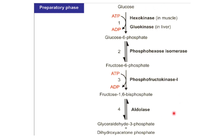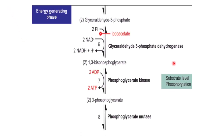This completes the preparatory phase or first phase of glycolysis. In the preparatory phase there is utilization of two molecules of ATP — one in the first step and another in the third step. Now the second phase is the energy-generating phase. The glyceraldehyde-3-phosphate synthesized in the first phase, along with dihydroxyacetone phosphate, is converted into another glyceraldehyde-3-phosphate by phosphotriose isomerase enzyme, giving two molecules of glyceraldehyde-3-phosphate.